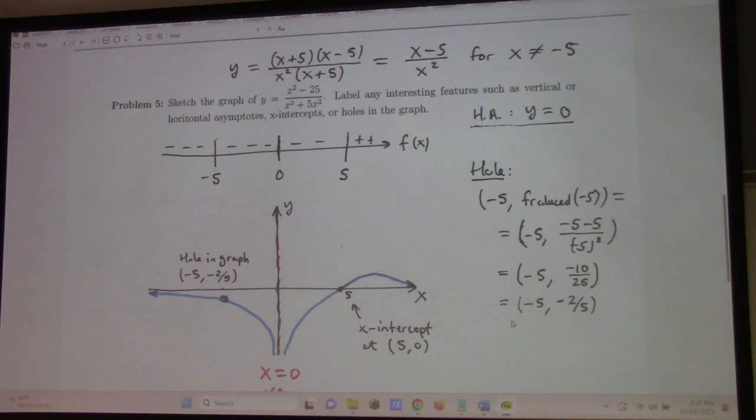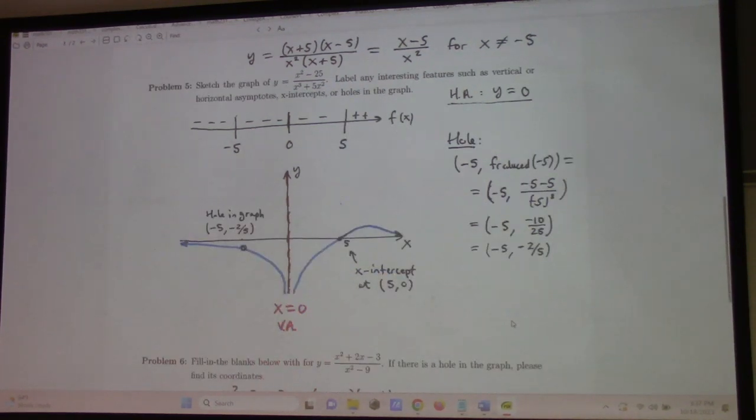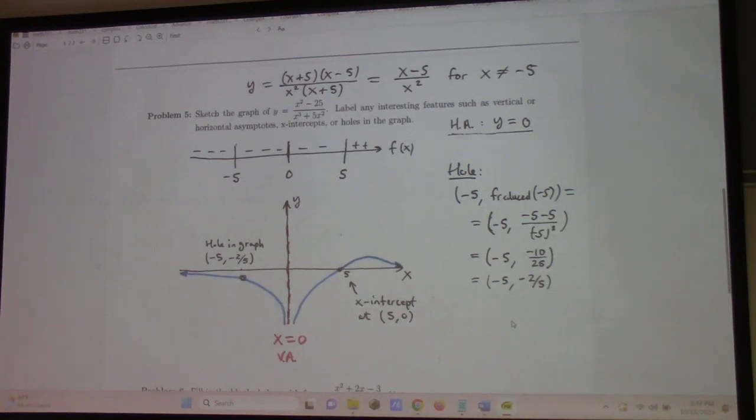Okay. Problem 5. A little bit more interesting. So, here, we can factor x squared minus 25, and we factor out an x squared downstairs. So, we've got x plus 5, x minus 5, x squared times x plus 5. And, so the x plus 5 is going to be canceling. And, that leaves us a reduced function of x minus 5 over x squared. So, this means that there's a hole in the graph at minus 5.